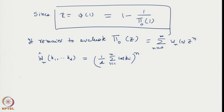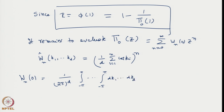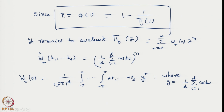From the inversion logic, we found that W_n(0) equals (1/2π)^d times the d-fold integral from -π to π in all k variables, evaluated at e^(i k·r) but at the origin r=0, so it is just unity, and we called it y^n, where y is defined as (1/d) Σ cos(k_i) for i=1 to d — that gives d distinct parameters.